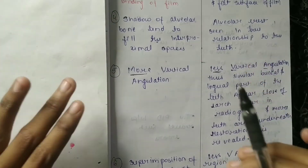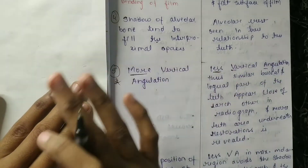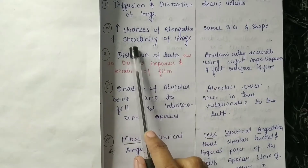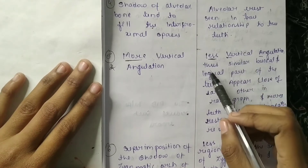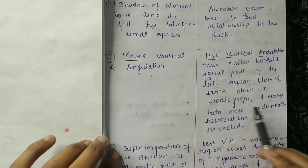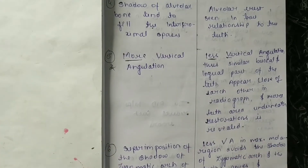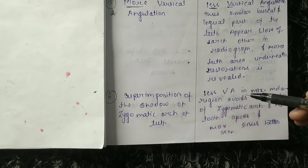The fifth difference is vertical angulation. In short cone there is more vertical angulation, which means high chances of elongation and shortening of the image. In long cone there is less vertical angulation, so the buccal and lingual parts of the teeth appear close to each other in the radiograph, and more tooth area underneath restorations is revealed.